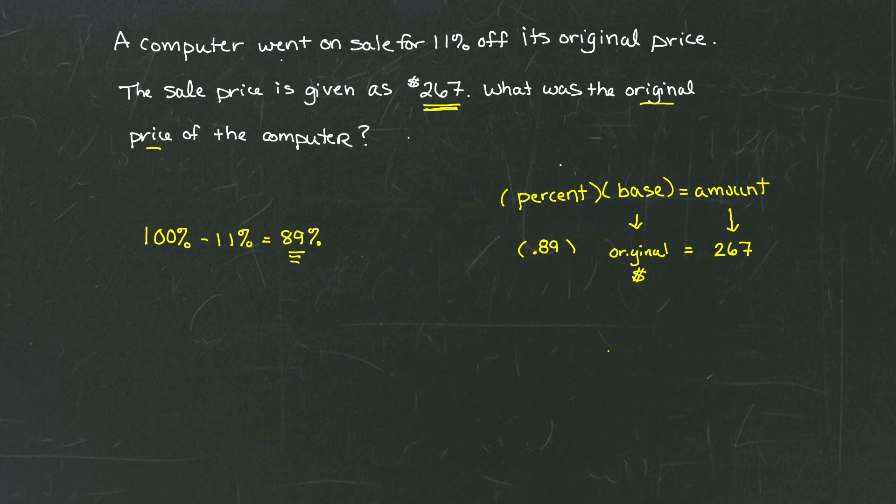We don't know what that original price is. In fact, we could use a variable if we wanted to. We could use the variable x to represent the original price, in which case our equation simply becomes 0.89 for 89% times the original price, which is x, equals 267. And this equation right here will help us solve this problem.